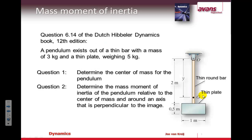So this is the question from the Hibbeler book — it's an example. It's a combined part consisting of a thin round bar and a thin plate. The first question is to determine the position of the center of mass for this combined part. The second question is to determine the mass moment of inertia around that center of mass. So it's going to be two steps to get the results of this question.